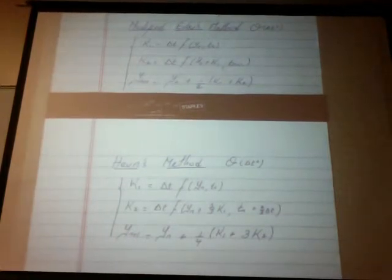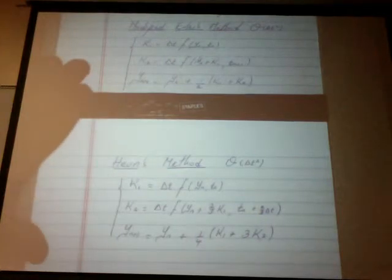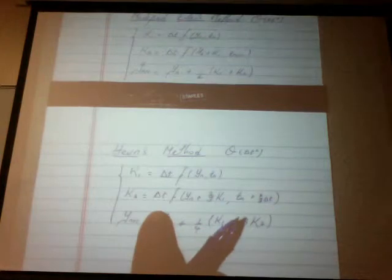Hoynes' method is a slight modification to the modified Euler method. It's also second-order accurate and is basically a weighted average of these two predicting coefficients — the predicted steps and the corrective step. By far, the most widely used method to approximate the solution of initial value problems is the Runge-Kutta method.